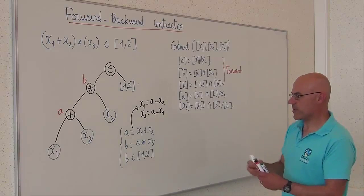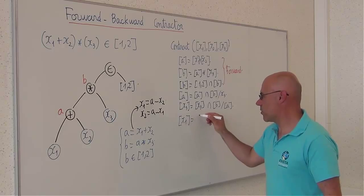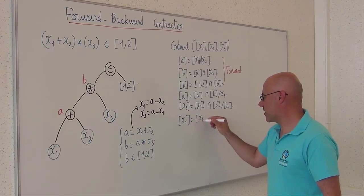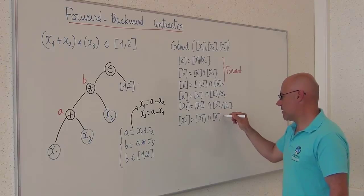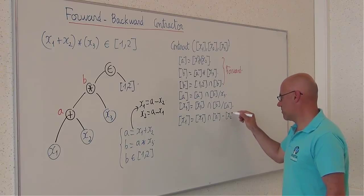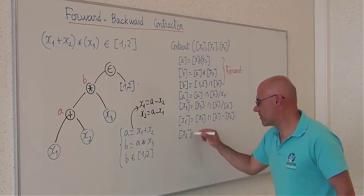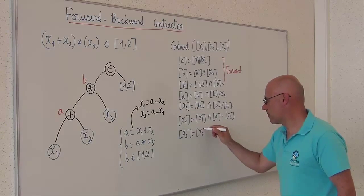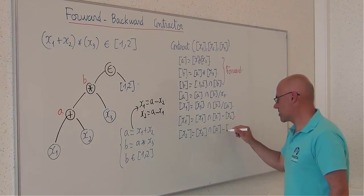So, the corresponding contraction will be x1 equal to x1 intersected with a minus x2 because of this, and x2 equal to x2 intersected with a minus x1.